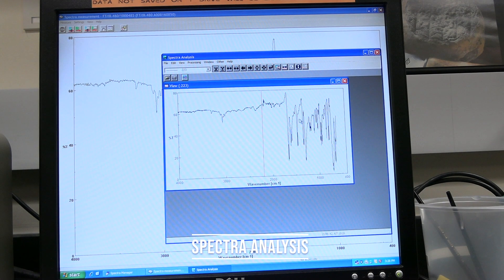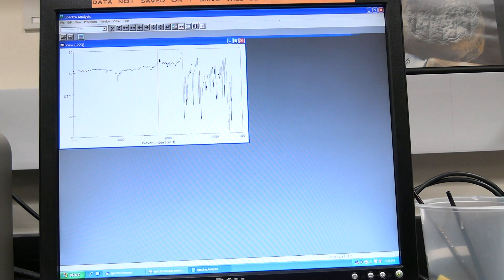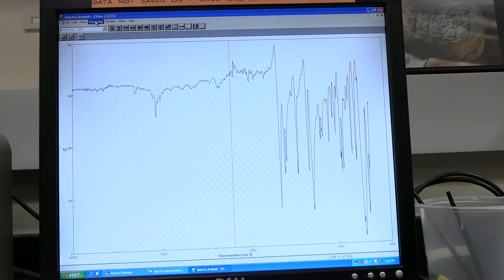Spectra analysis. Spectra analysis should be automatically open after the first measurement. Subsequent measurement data will automatically be sent to spectra analysis. Expand the window if needed. Click on processing, then peak processing, and then on peak find.